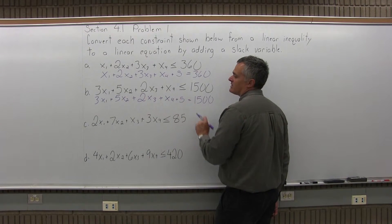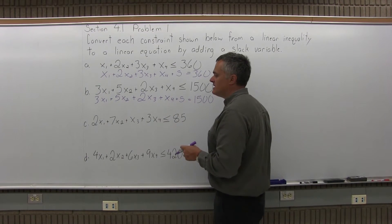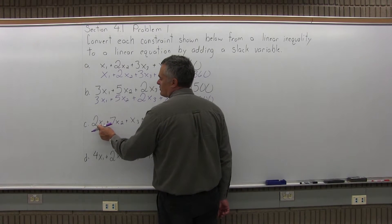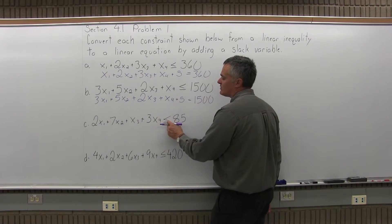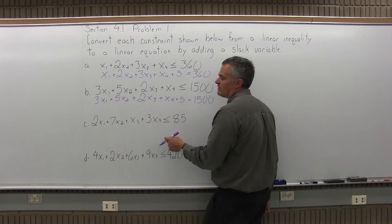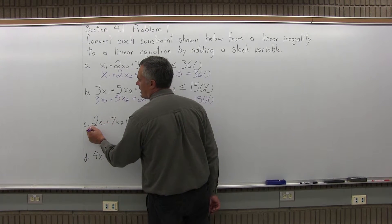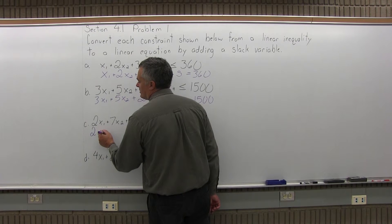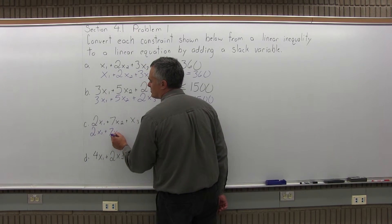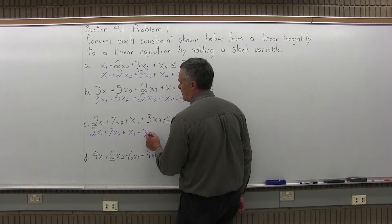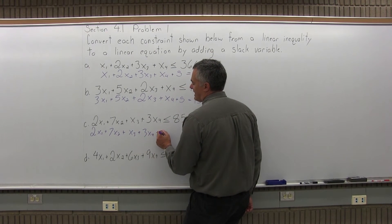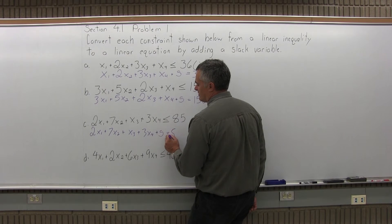Again, the s takes up the slack, s is for slack. And then part C is convert 2x1 plus 7x2 plus x3 plus 3x4 is less than or equal to 85 into a linear equation instead of an inequality. So I'm going to do 2x1 plus 7x2 plus x3 plus 3x4 plus s is now equal to 85.